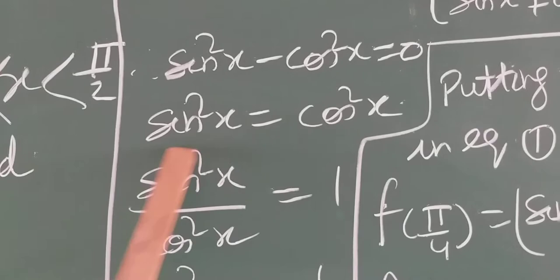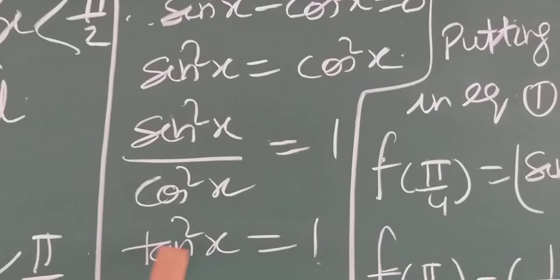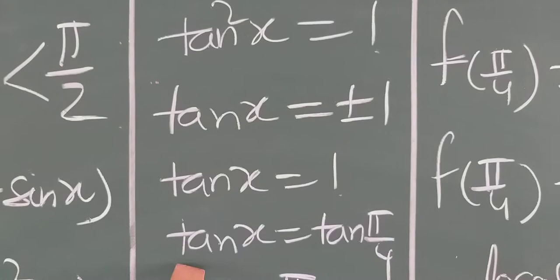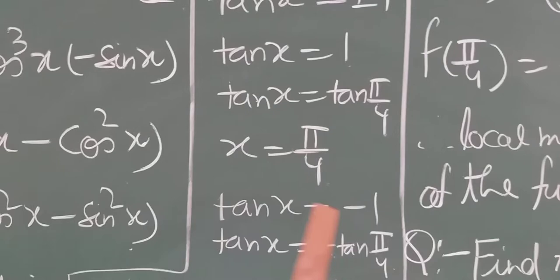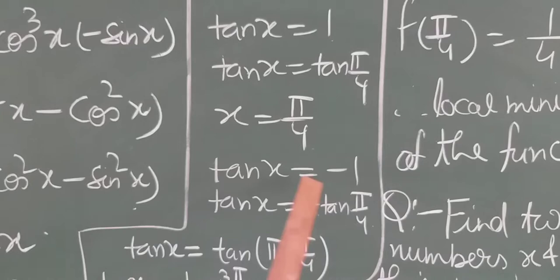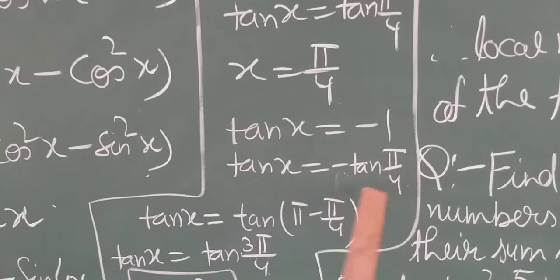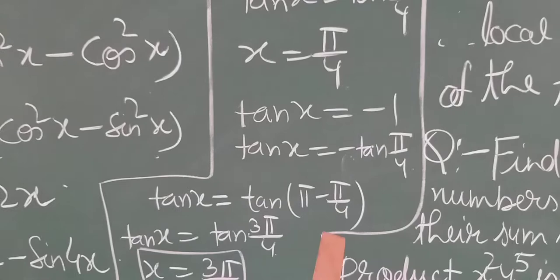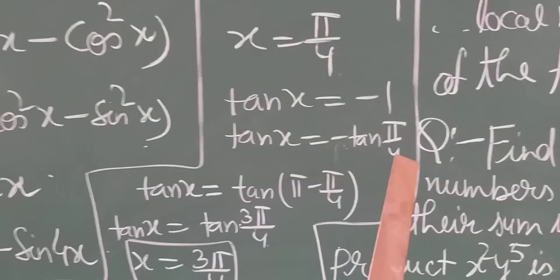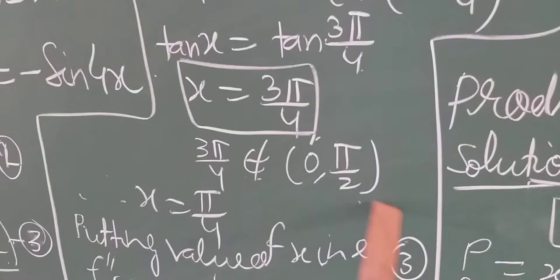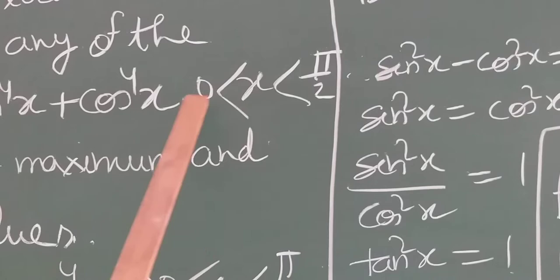So tanx = ±1. Taking tanx = 1 gives tanx = tan(π/4), so x = π/4. Taking tanx = −1 gives x = 3π/4, since tan is negative in the second quadrant. But 3π/4 does not belong to (0, π/2), so we reject it. Therefore there is only one critical point: x = π/4.